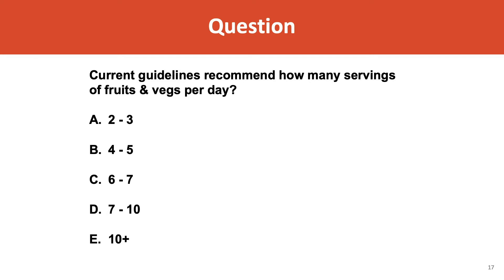There are current guidelines — from the American Heart Association, American Cancer Association, and Diabetes Association — that all converge largely on the answer to this question: How many servings of fruits and vegetables is it recommended a person get every day? The options are two to three, four to five, or six to seven servings.